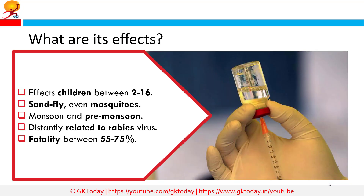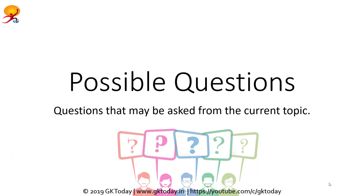What are the effects of this virus? The virus predominantly infects children between the ages of 2 to 16, spreading through the bite of a sandfly, and in some cases even the mosquito during monsoon and pre-monsoon season. It is distantly related to the virus that causes rabies and is known to have a case fatality rate between 55 to 75%.